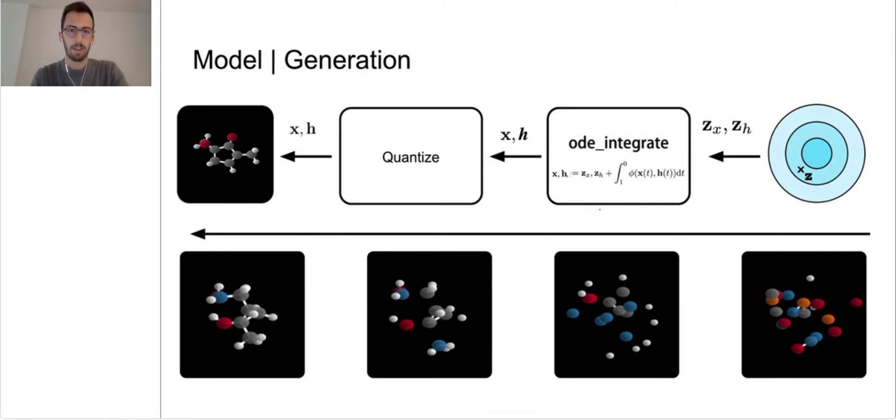In this image, we provide a visualization of how the molecule is gradually generated through the normalizing flow given a noisy sample z. Following, we present an animation of the generation and inference processes for a single example.